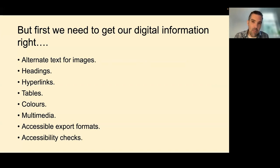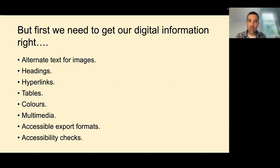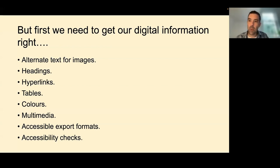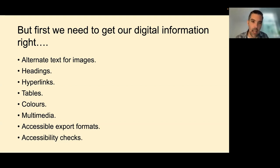We need to get our digital information right. There are some really essential things we can do when designing information to remove those barriers before they present as barriers. Things like alternate text for images — if you can't see that important visual information that is conveying meaning, maybe sharing data in a visual format, what's the backup plan? How are we going to present it to somebody who can't see it? What about elements coded by colour? You see this a lot with forms where people say 'all the bits in red are mandatory' — but what if I can't see the bits in red?